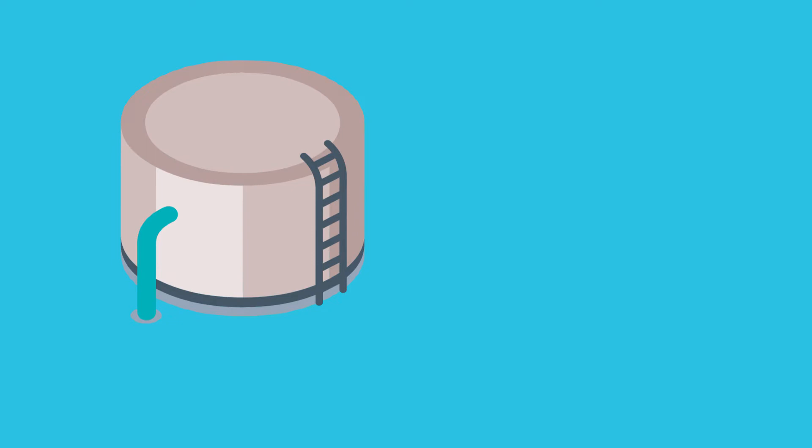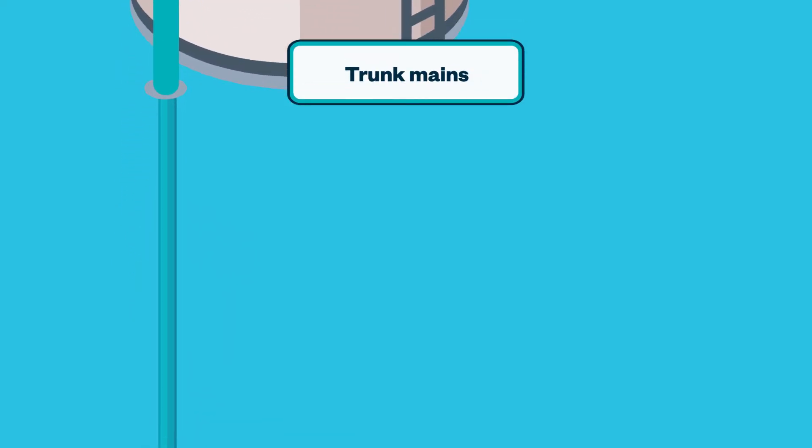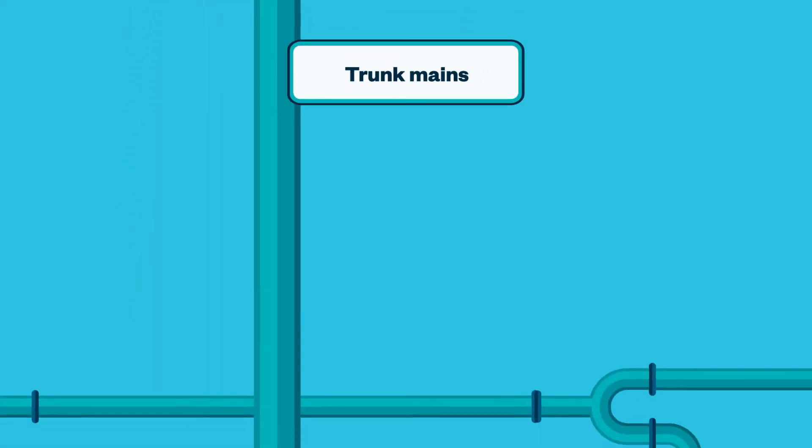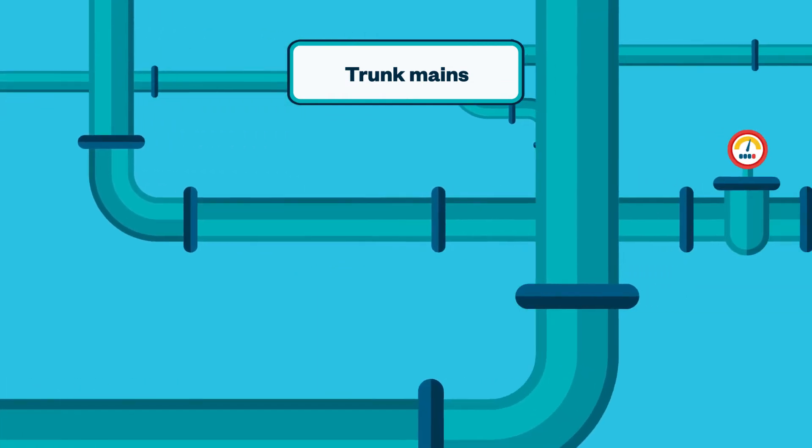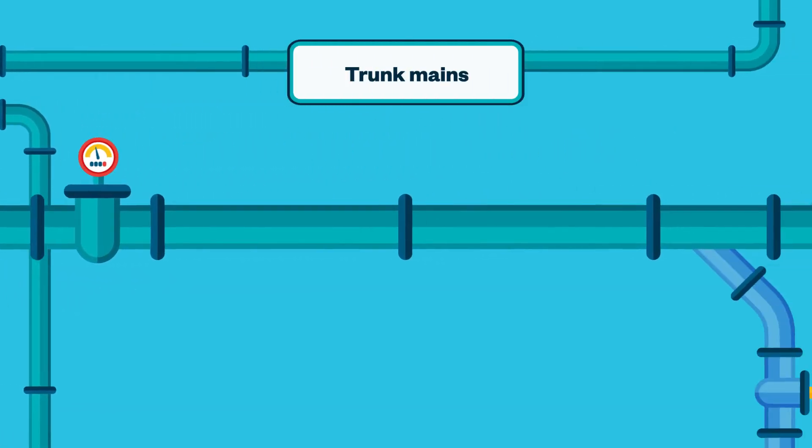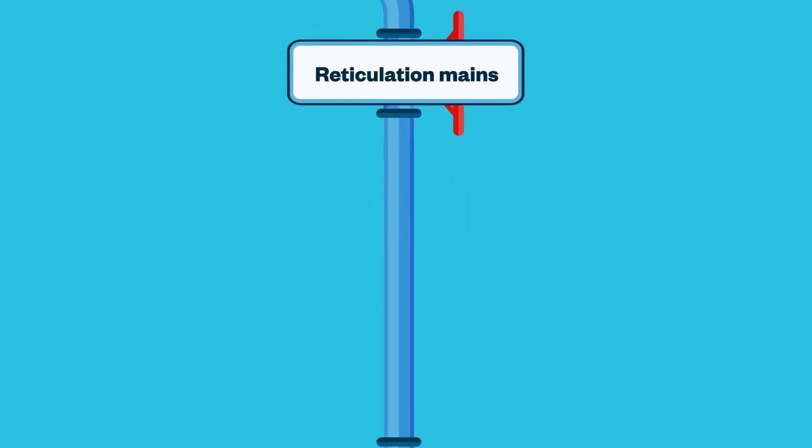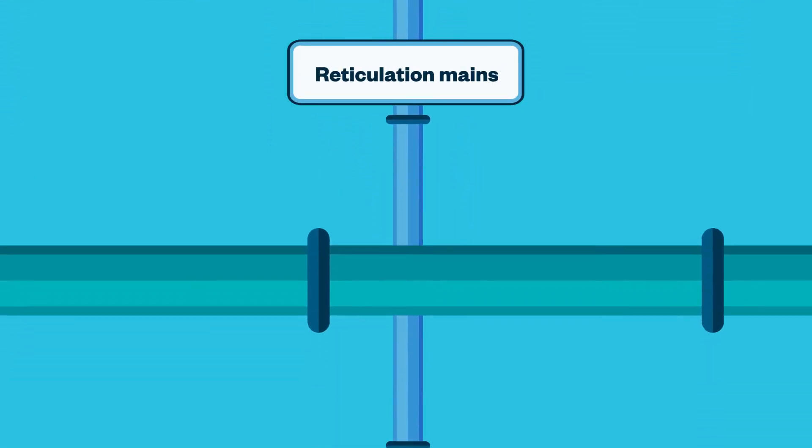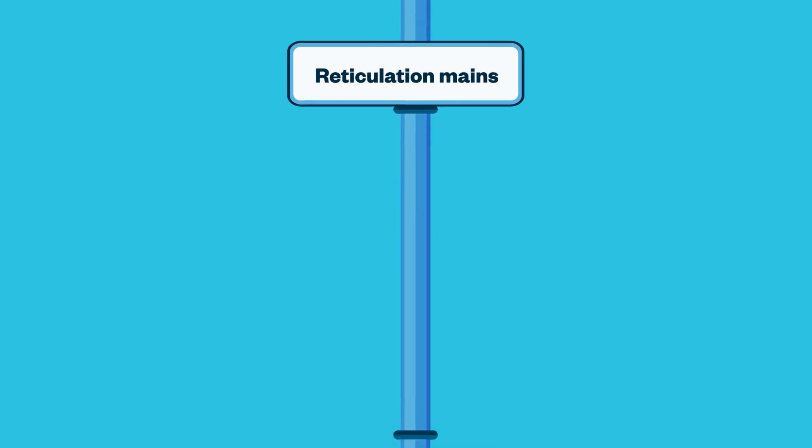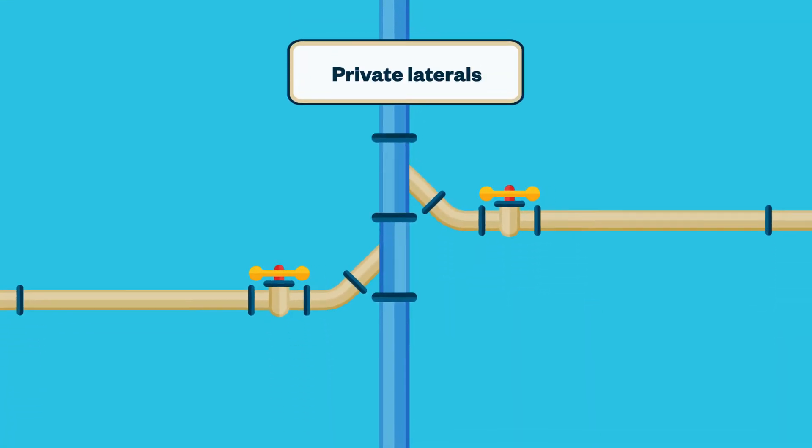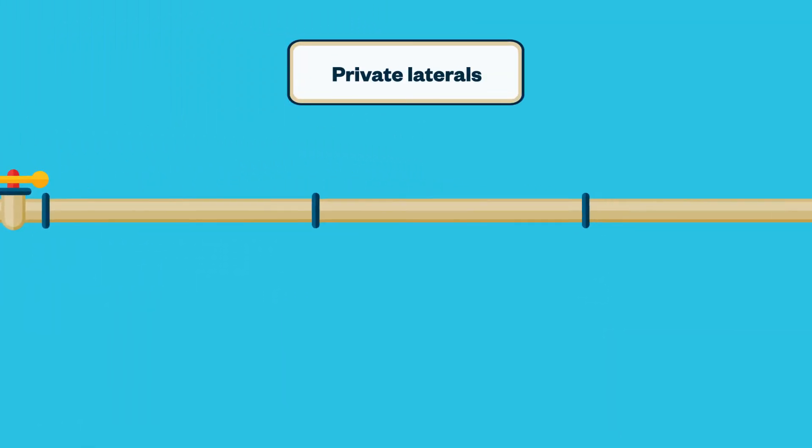From the reservoirs are trunk mains, which are like the main roads travelling down into residential and commercial areas. The trunk mains connect to smaller pipes called reticulation mains, a bit like the roads that lead to your home or work. Finally, there are private laterals which come off the reticulation mains. They're the driveways of the network. They connect the public drinking water network to your home.